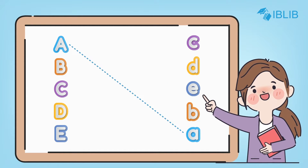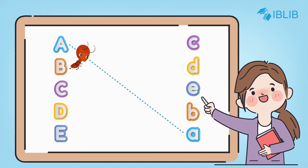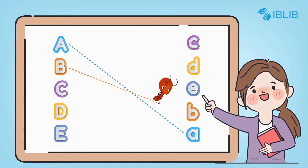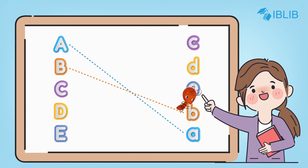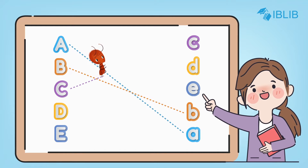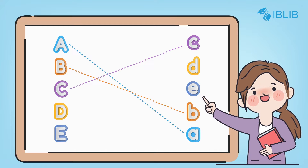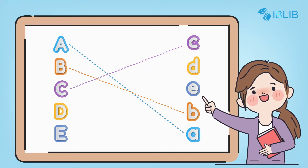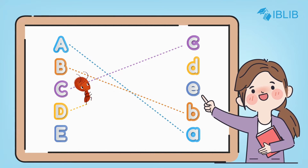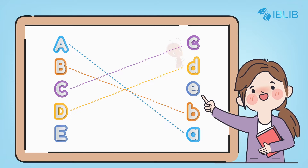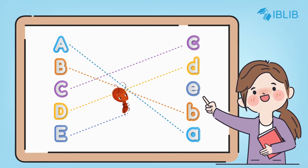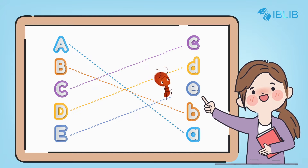Match capital B with small b. Match capital C with small c. Match capital D with small d. Match capital E with small e.